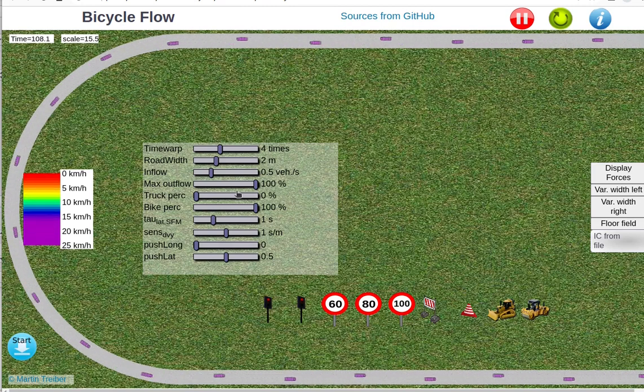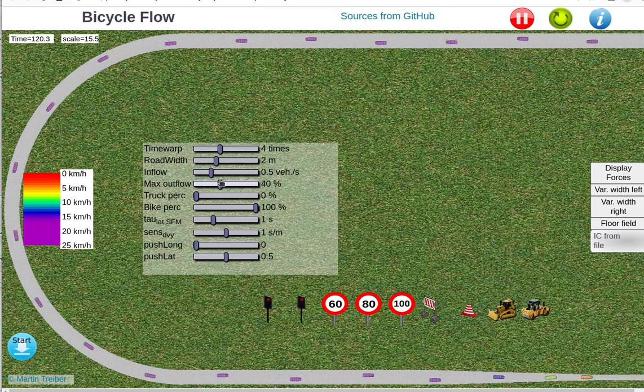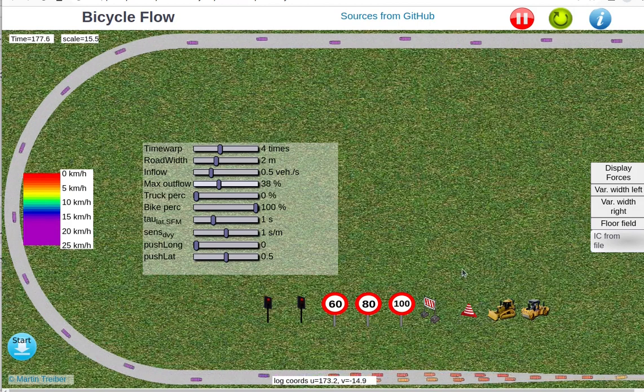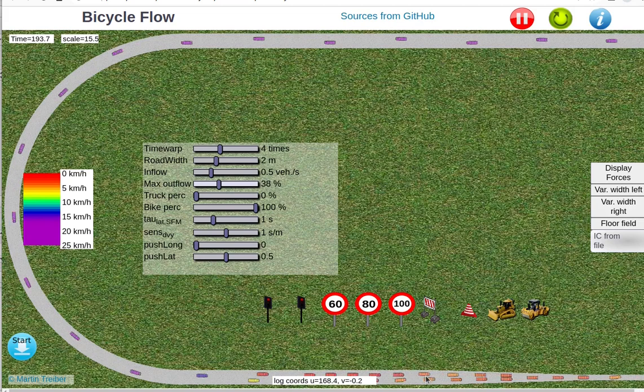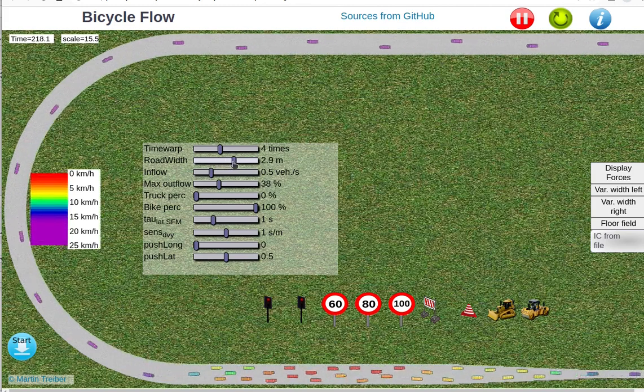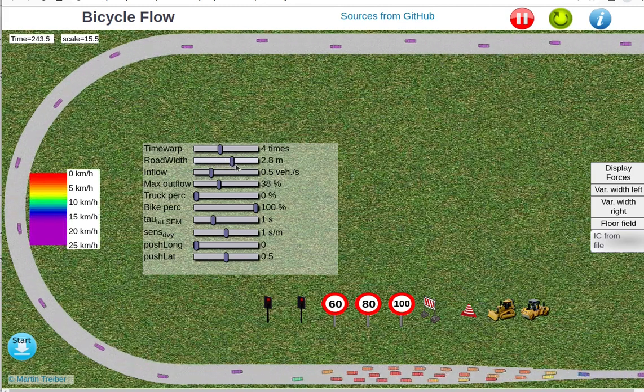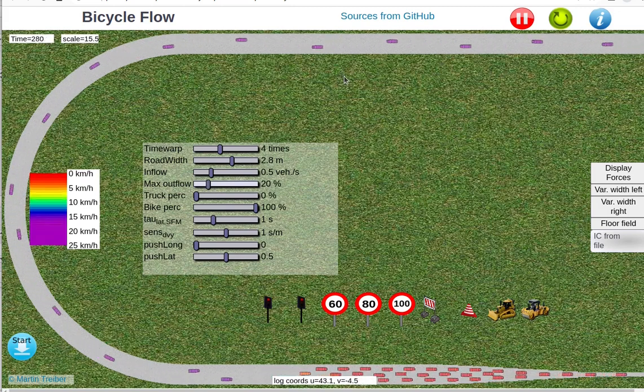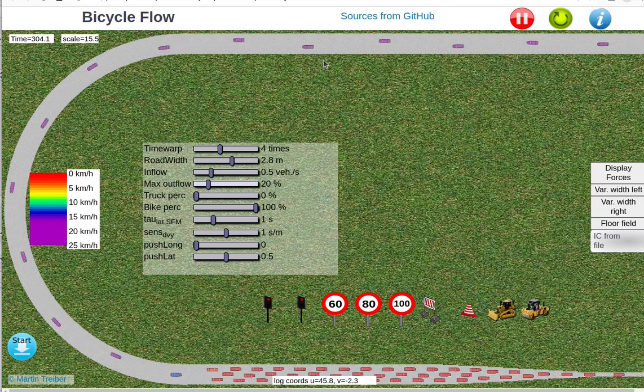However, if I introduce a bottleneck by reducing the outflow capacity just by narrowing the road, then we will see that in the congested zone, this staggered following mode transforms to just a two-lane bike traffic. If I now increase the road width, the bicycle path width to say 2.5 meters, then we see that now we have spontaneously three lanes in the congested region, while in the free region we have a more or less irregular staggered following because that is just more comfortable for the cyclists.